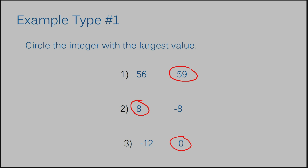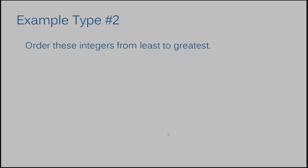So let's move into a different type of example to make sure we understand integers. Example number two says order these integers from least to greatest. In order to do that, I'm going to think about a number line. I'll remember that all of the numbers in relationship to my zero that were positive or did not have a negative sign were on the right side. So I'm going to start with zero and write it down. I'm not going to deal with the negative two right now — I'm going to hold off on that and just deal with all my other numbers. I've already used zero, so I'm going to cross it off. So right now I'm only dealing with a one, a five, and a two. I can order those from least to greatest pretty easily — I know that one comes first, then two, then five.